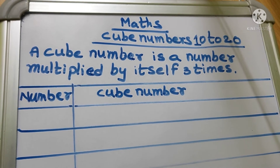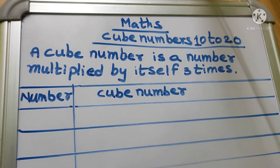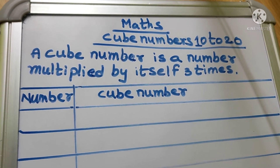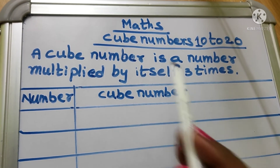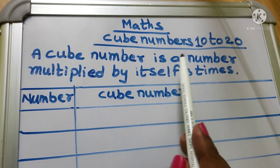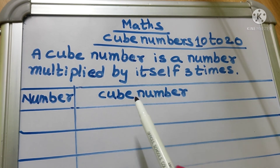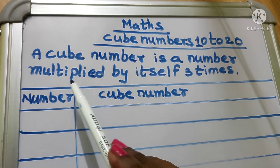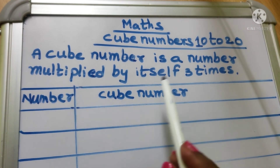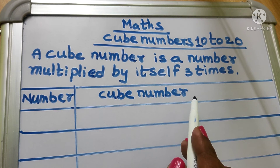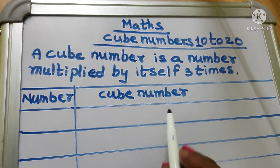Hello viewers, welcome to the channel. In math today we will learn cube numbers, cube numbers 10 to 20. What is a cube number? A cube number is a number multiplied by itself 3 times.